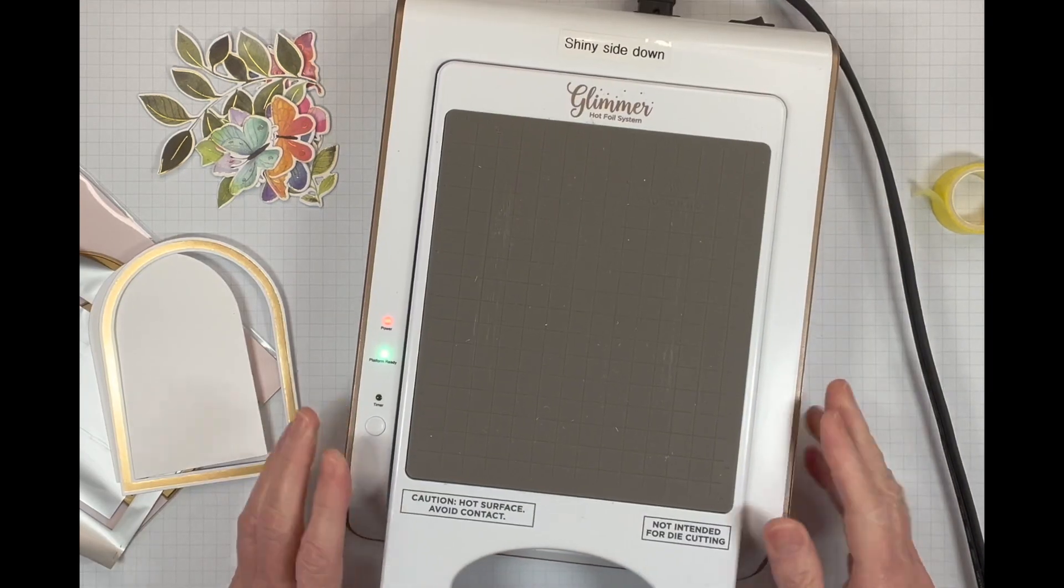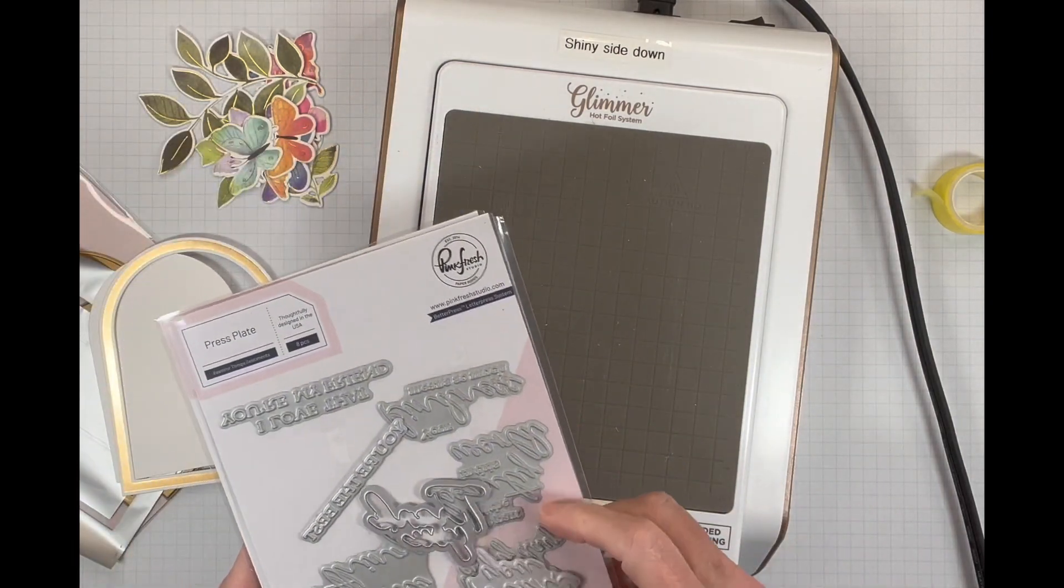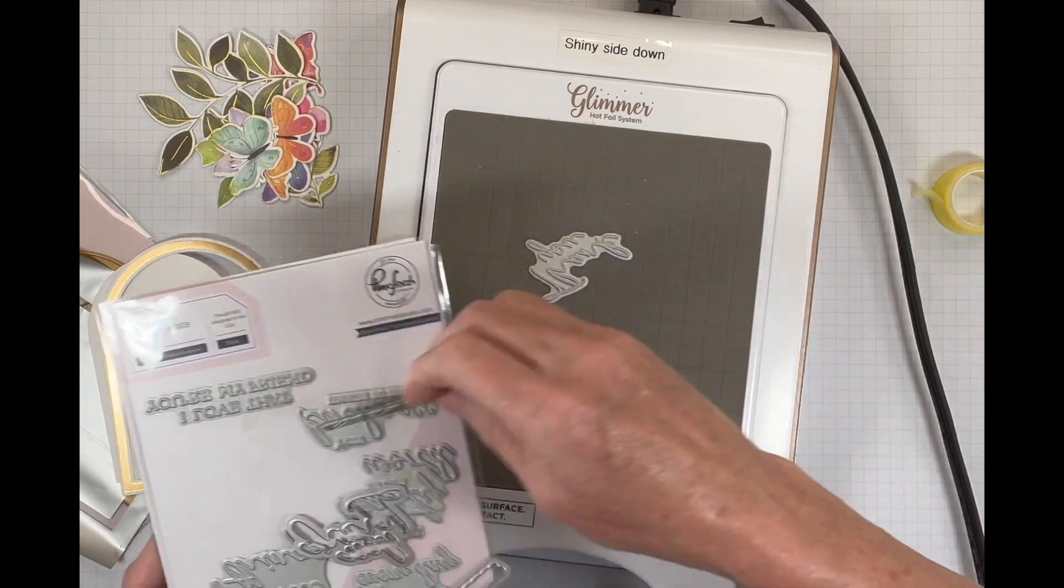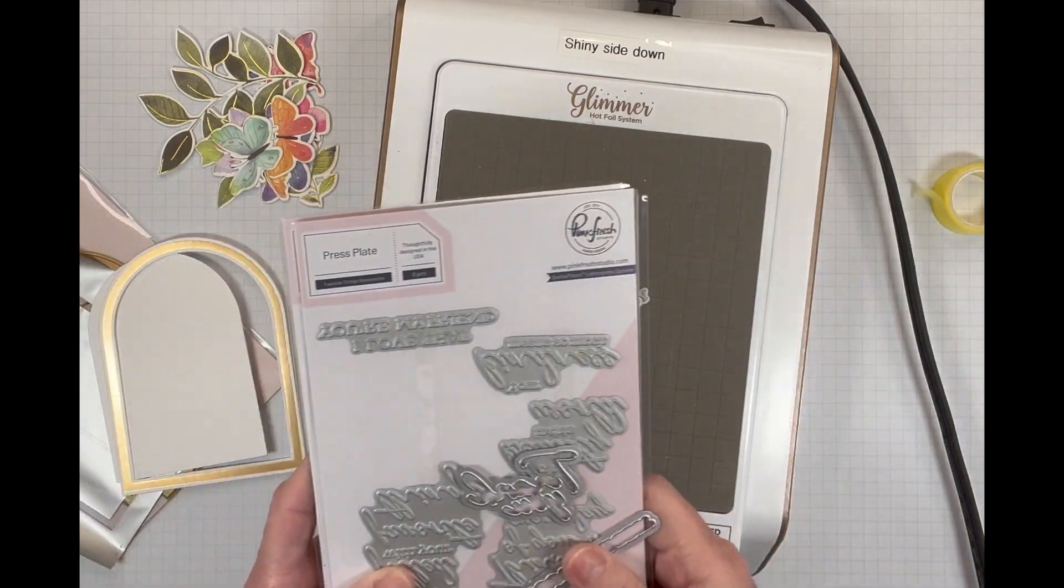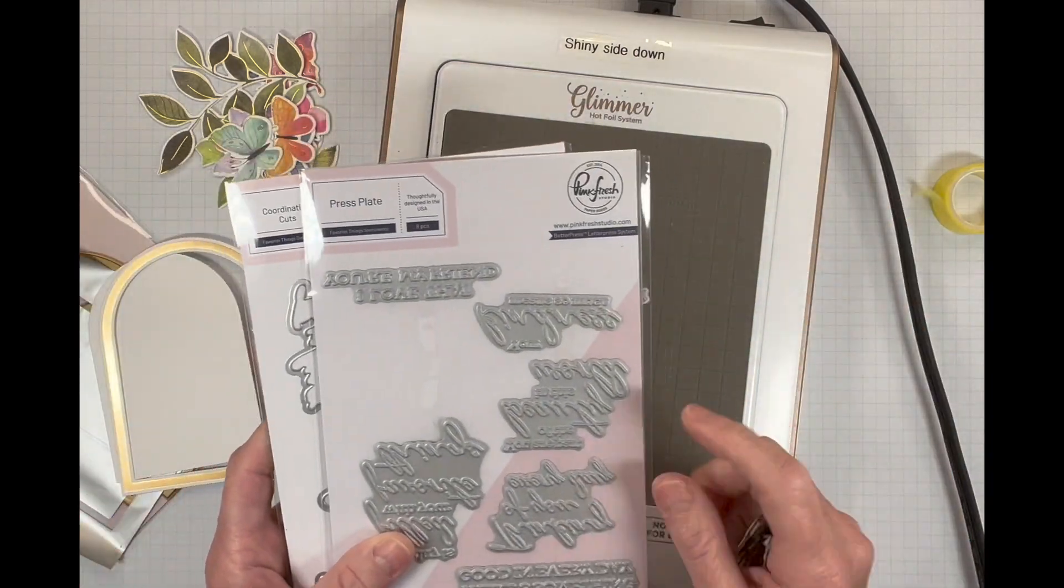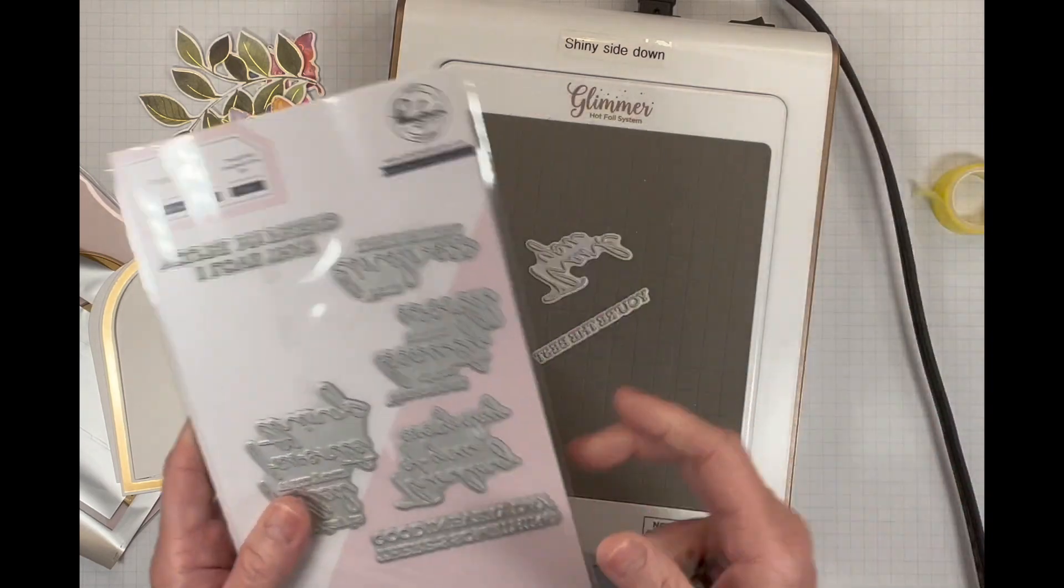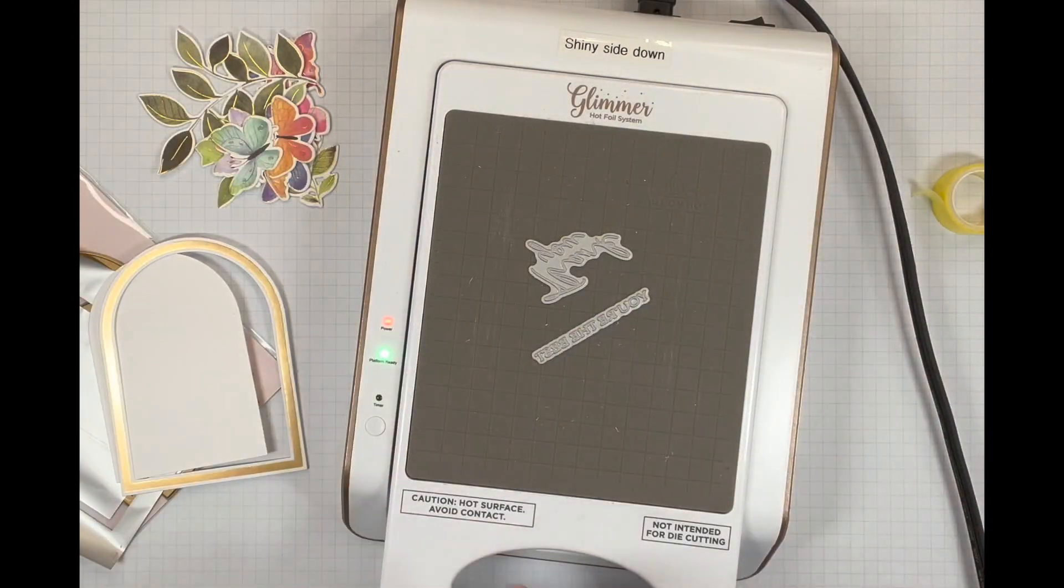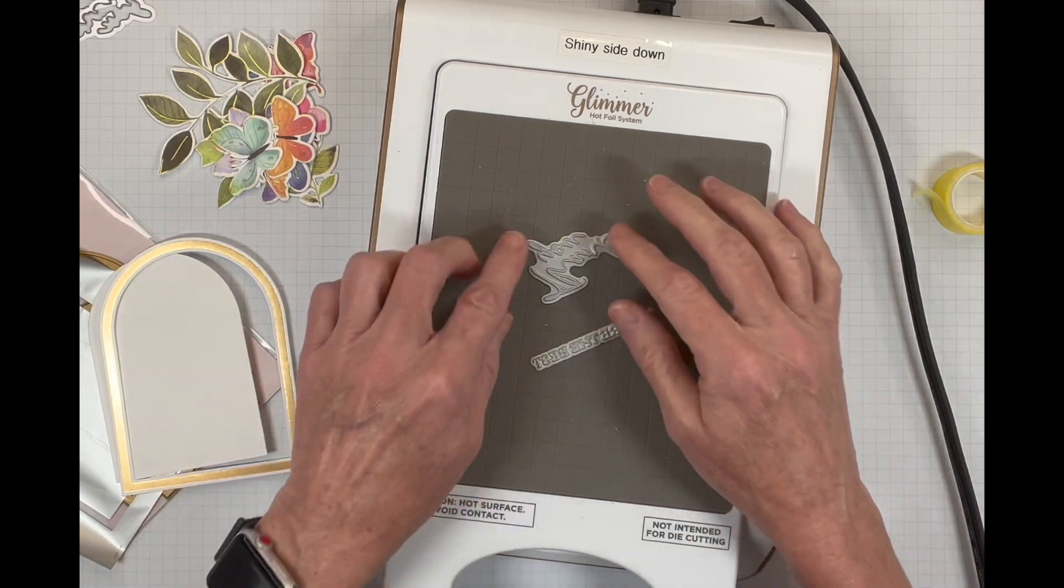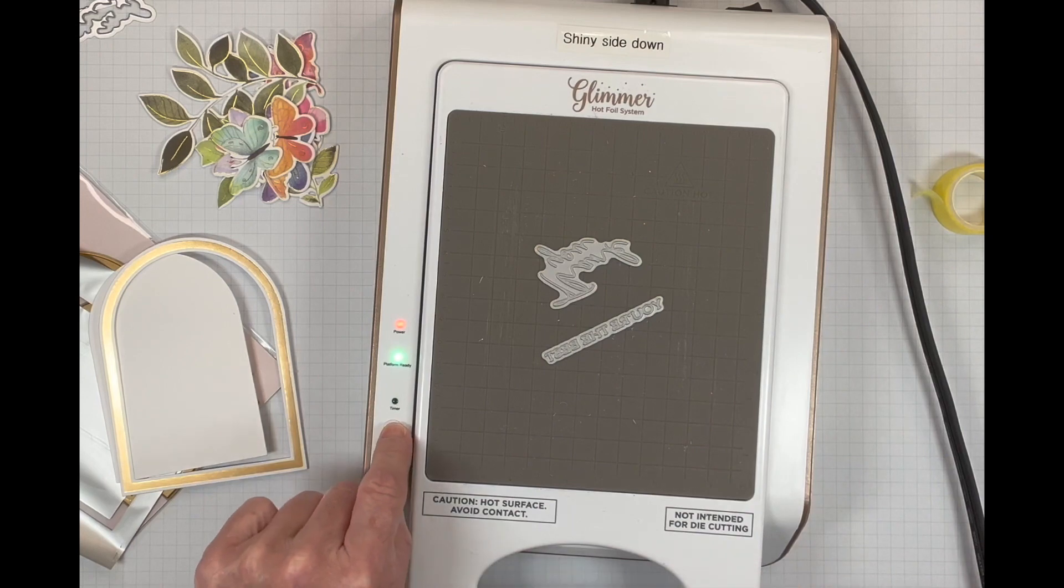So I've got my glimmer all warmed up. And for our sentiment, we are using the thank you and the you're the best from the favorite things sentiments. And this has a hot foil sentiments. And you can also get the coordinating dies. I just love it when you get coordinating dies with your sentiments. So let's get our thank you and you're the best on there. We need to turn on the timer.